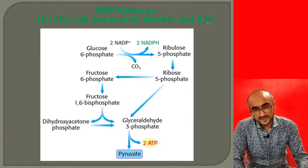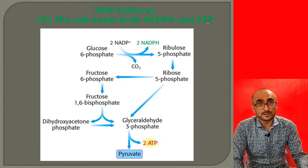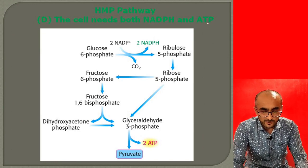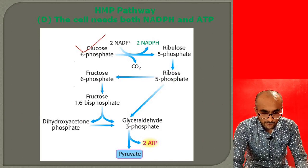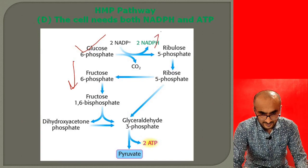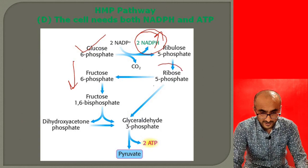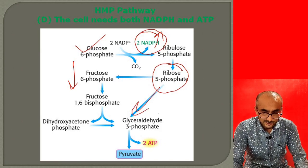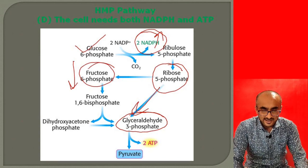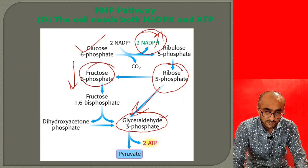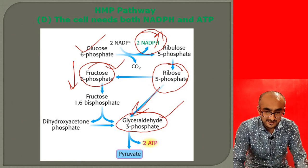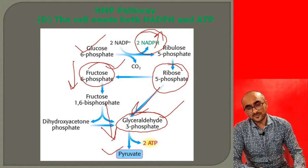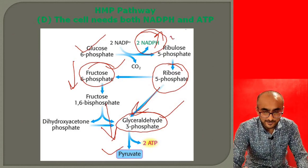When a cell needs both NADPH and ATP, glucose enters the HMP pathway first to produce NADPH. The ribose-5-phosphate produced — which is not required — enters the non-oxidative phase to give rise to glyceraldehyde-3-phosphate and fructose-6-phosphate. These two products then enter glycolysis and are converted to pyruvic acid, generating ATP. In this way, both the demand for NADPH and ATP are managed simultaneously.